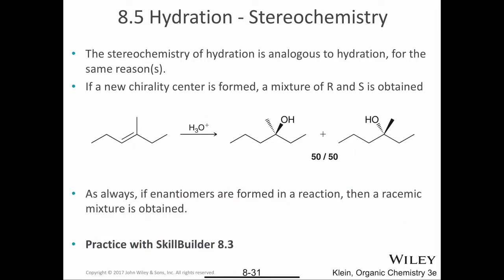This slide deals with the stereochemistry of hydration. The stereochemistry of hydration is analogous to hydrohalogenation. If a new chirality center is formed, we get a mixture of R and S. Try to draw the mechanism for this reaction and show how you end up producing this tertiary carbocation. What's important is that this tertiary carbocation, the carbon is sp2 hybridized. Therefore, it's trigonal planar. That means water can attack from either face of the molecule and we end up with a mixture of R and S. As always, if enantiomers are formed in the reaction, then a racemic mixture is obtained.